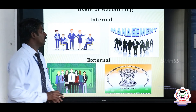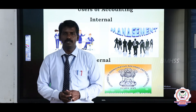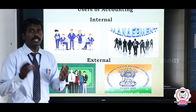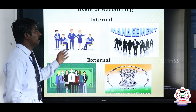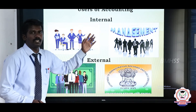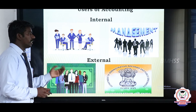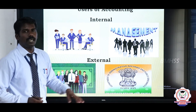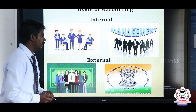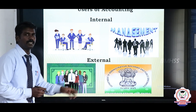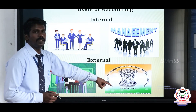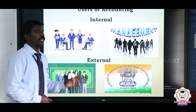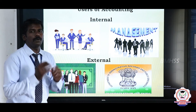Uses of accounting information. There are internal users and external users. Internal users are employees and management. External users are outside the company who use the financial information — these include investors, the public, and the government. These three groups use accounting information to know about the company.